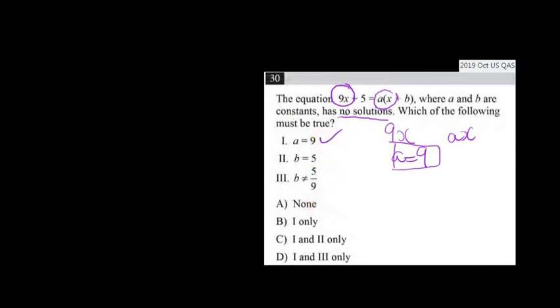Now for the next piece of information, we also know that the constant terms cannot be equal to each other. Because if they were equal to each other, then we would have something like 0 equals 0 or 5 equals 5 in this case. And in that case, there would be infinite solutions. So that cannot happen. And so we know that the constant terms on both sides are not equal to each other.